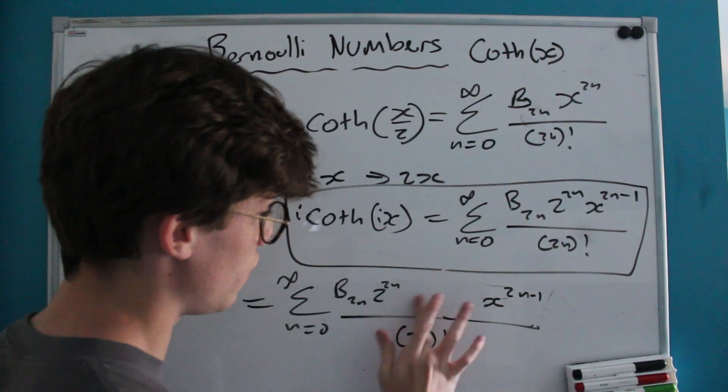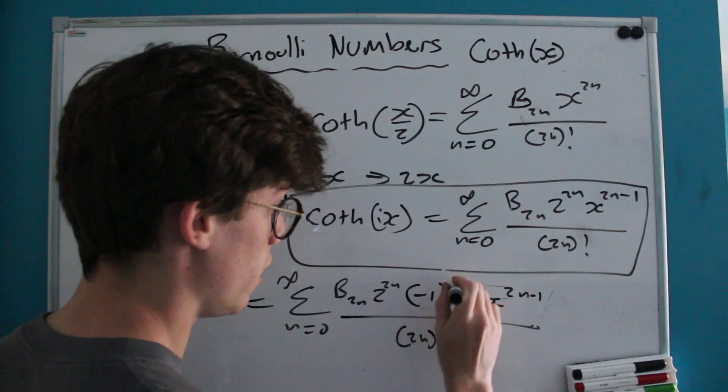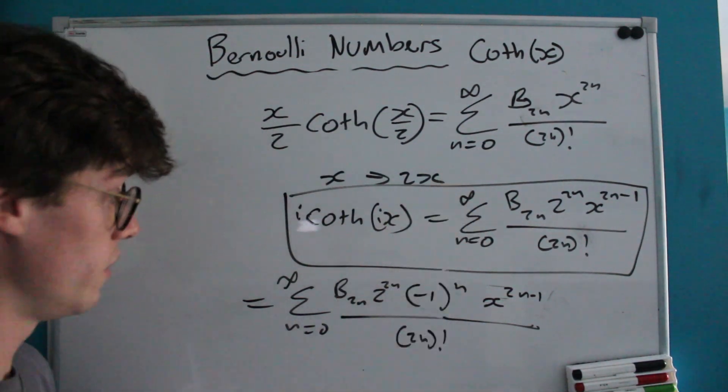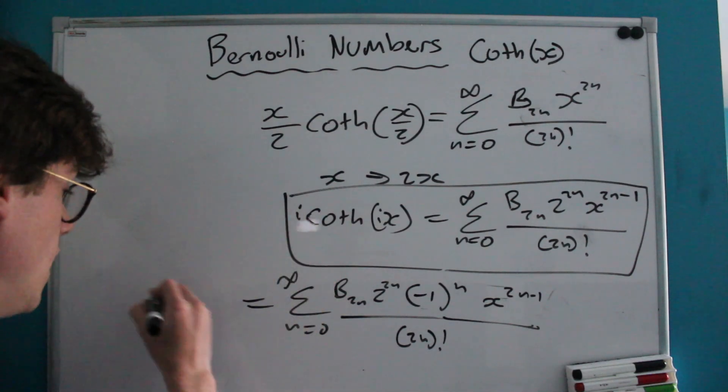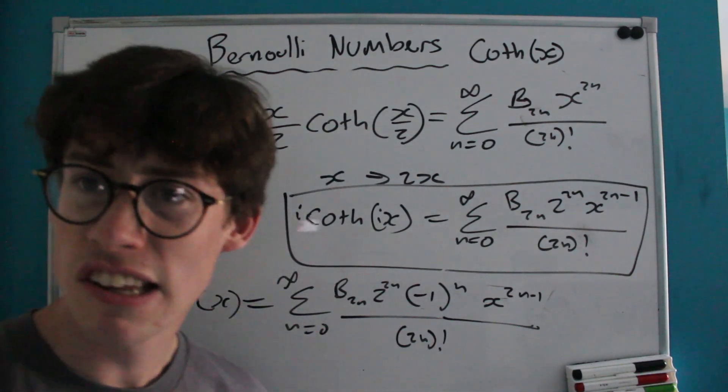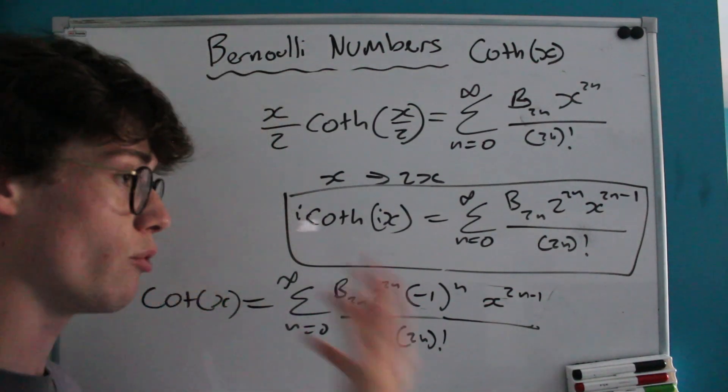Of course, we know that i^(2n) is just the same as (-1)^n, so it's a very similar-looking formula. It just has a (-1)^n in it instead, and this is our formula for just cotangent of X. It's this one that we're going to be using as we progress.